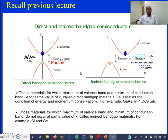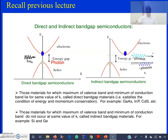If you draw a plot between energy versus momentum vector, this shows the maximum of the valency band and this shows the minimum of the conduction band. When the electron and hole recombine, the energy is released in the form of a photon. Examples for direct bandgap semiconducting materials are compound semiconductors such as gallium arsenide, indium phosphide, and some others.